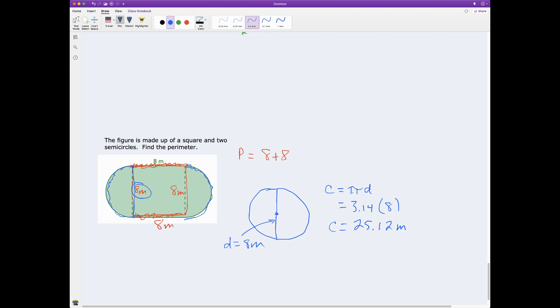So now that we've figured out this distance, I just need to add it to this distance and this distance, and I will have my answer. So let me add 25.12 to the 8 and the 8. I add those together, and I get 41.12, and my units are meters.